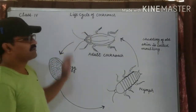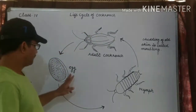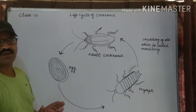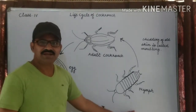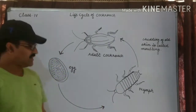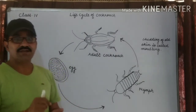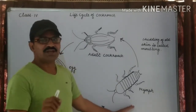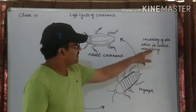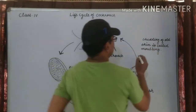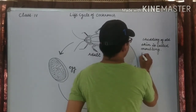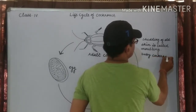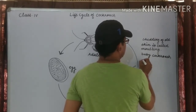How many stages are in the life cycle of the cockroach? There are three stages: one is egg, the second is nymph, and the third is adult cockroach. When the egg hatches out, the baby cockroach comes out — that is known as the nymph. The nymph sheds its skin several times and changes into an adult. This process is known as molting. Shedding of old skin is called molting. The baby cockroach is called nymph.